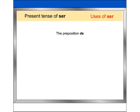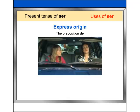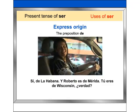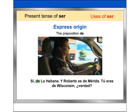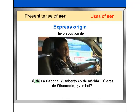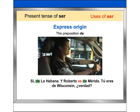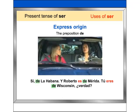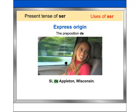Ser is also used with the preposition de to express origin: '¿Usted es de Cuba?' 'Sí, de La Habana.' 'Y Roberto es de Mérida.' 'Tú eres de Wisconsin, ¿verdad?' 'Sí, de Appleton, Wisconsin.'